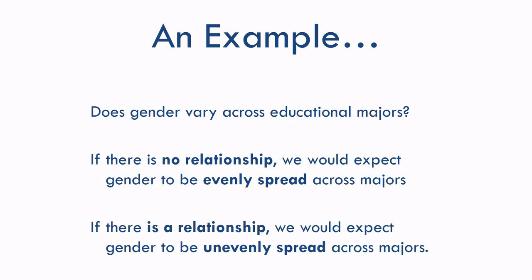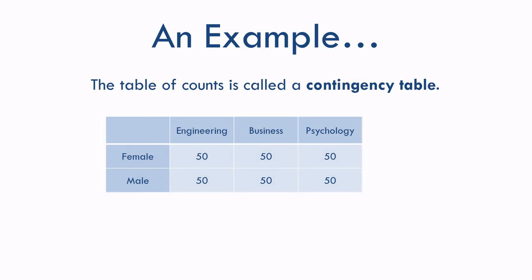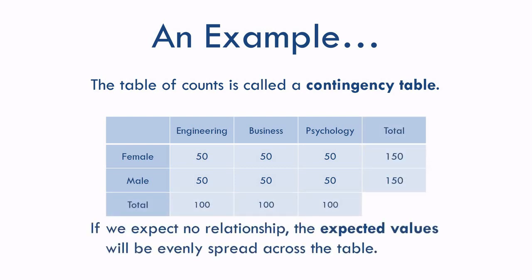To solve the chi-square, we need to find two things: the value we would expect if there's no relationship, and the actual value, which we'll call the observed value. So let's imagine there's no relationship — a completely even spread. We have 300 students evenly spread across majors and gender. If we put those counts in a table, it's called a contingency table.